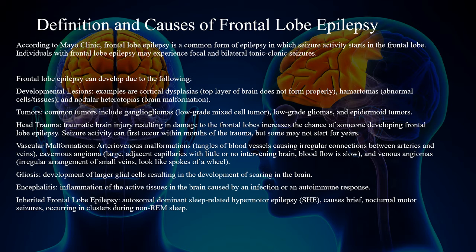Head trauma — traumatic brain injury resulting in damage to the frontal lobes increases the chance of developing frontal lobe epilepsy. Seizure activity can occur within months of the trauma, but some may not start for years. Vascular malformation — arteriovenous malformations are tangled blood vessels causing irregular connections between arteries and veins. Cavernous angiomas are large adjacent capillaries with little or no intervening brain tissue where blood flow is slow. Venous angiomas are irregular arrangements of small veins that look like spokes of a wheel.